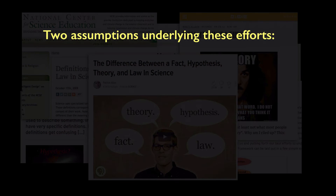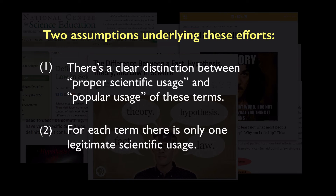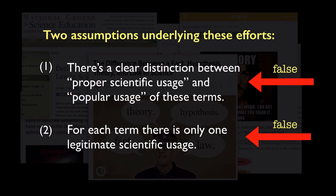The root of the problem, I think, is the assumption that all these efforts seem to share: that scientists use these terms with very specific meanings that are unfamiliar to the public. So they divide meanings into a proper scientific usage and popular usage, and then assume that for any given scientific term, there is only one legitimate scientific usage, and they're going to tell us what that usage is. The problem is that both of these assumptions are demonstrably false, and this generates a lot of problems with how the issues are discussed from this point forward.